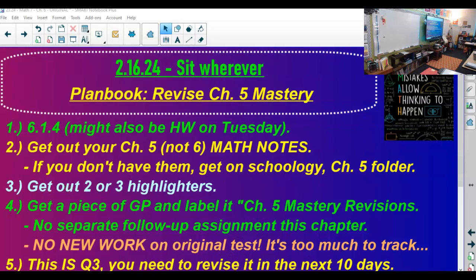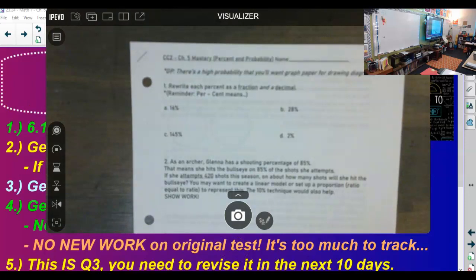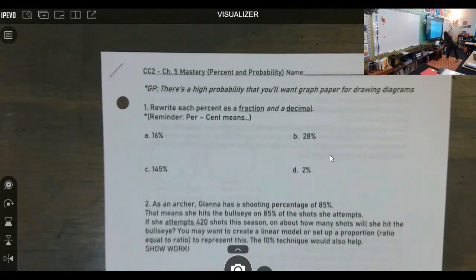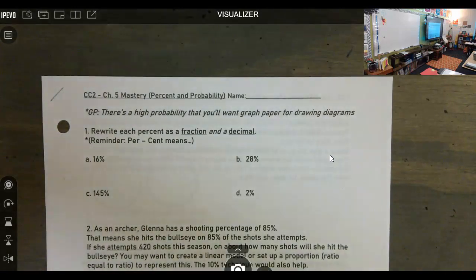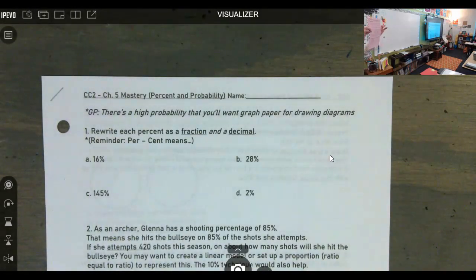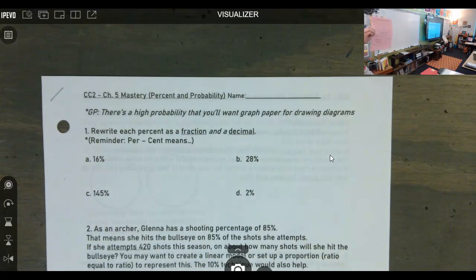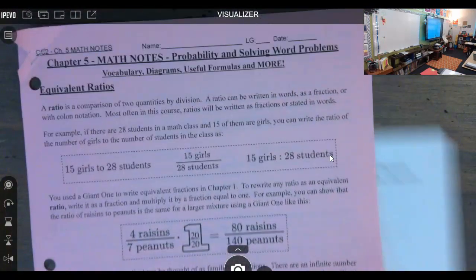Let's talk about the mastery that you have back in front of you. I hope you did not put it away yet, because why would you think we're not going to talk about it? We're going to go problem by problem. I'm going to give you no answers. What I'm going to give you is the advice of what to highlight or what notes to make or what to go look at in your math notes. If you don't have your Chapter 5 math notes out yet, get them out. If you lost them, use Schoology. The math notes live in Schoology in the Chapter 5 folder.